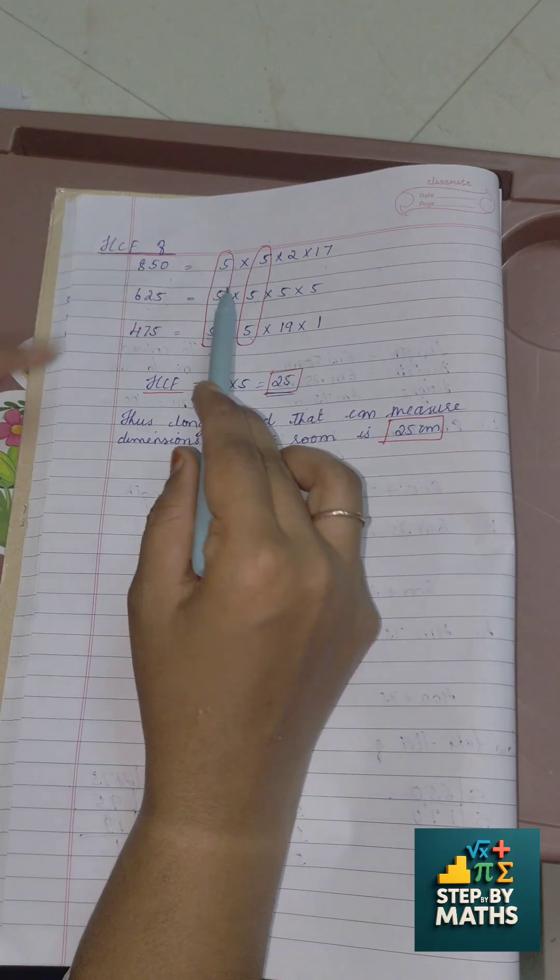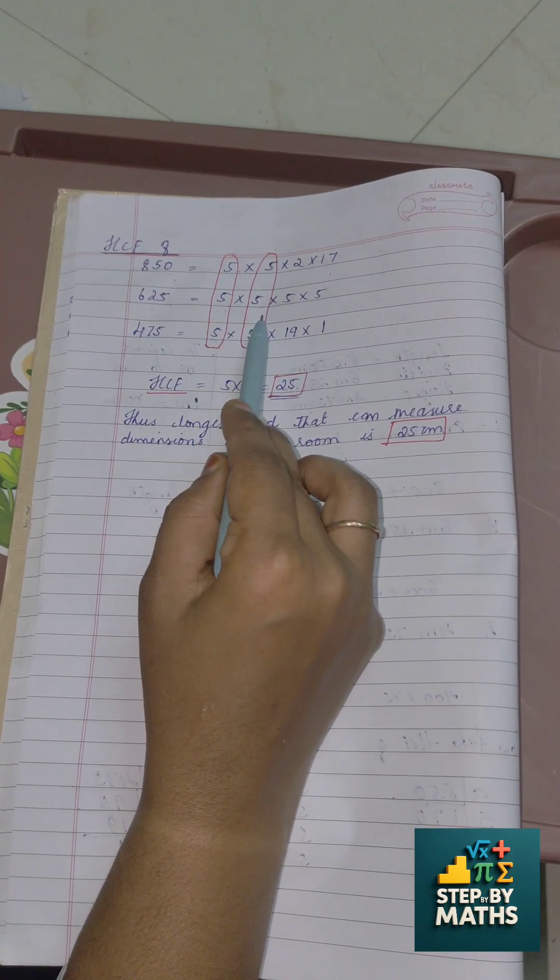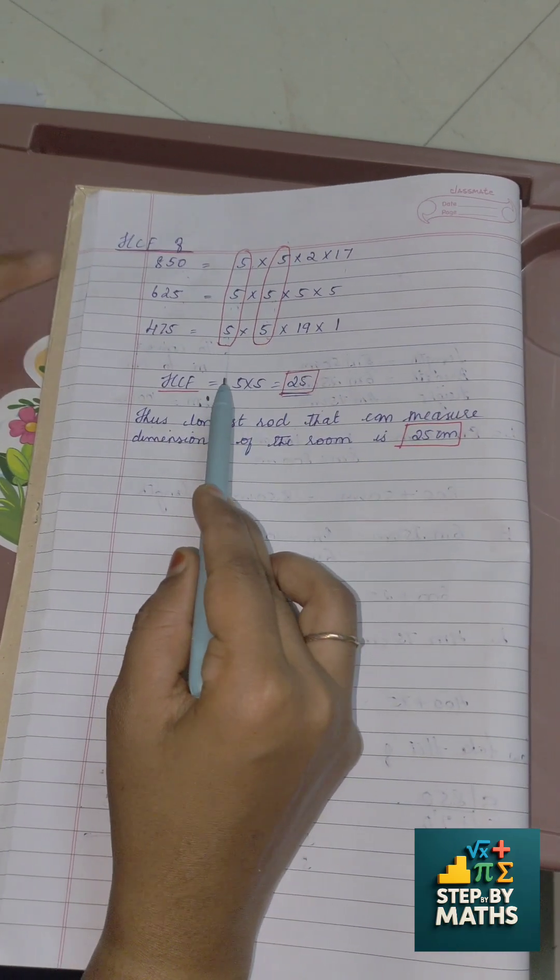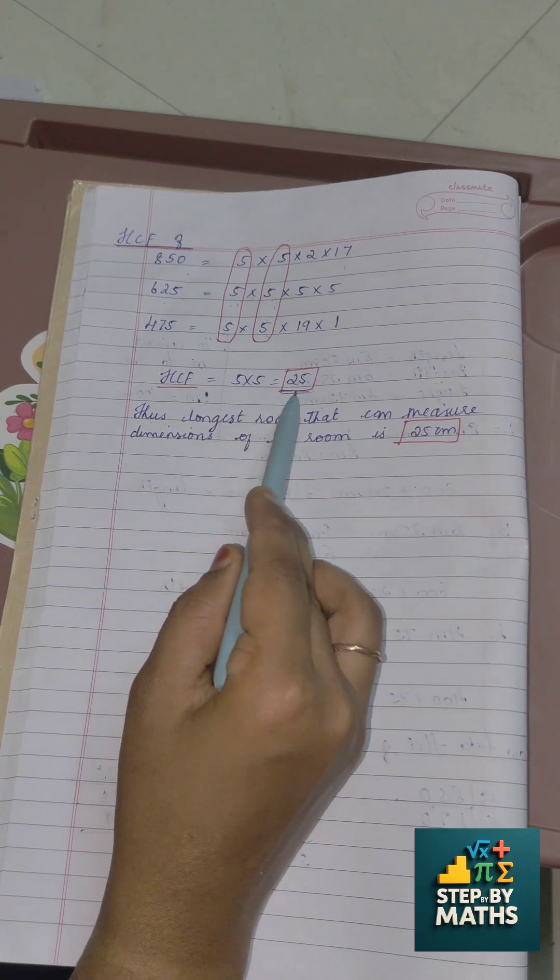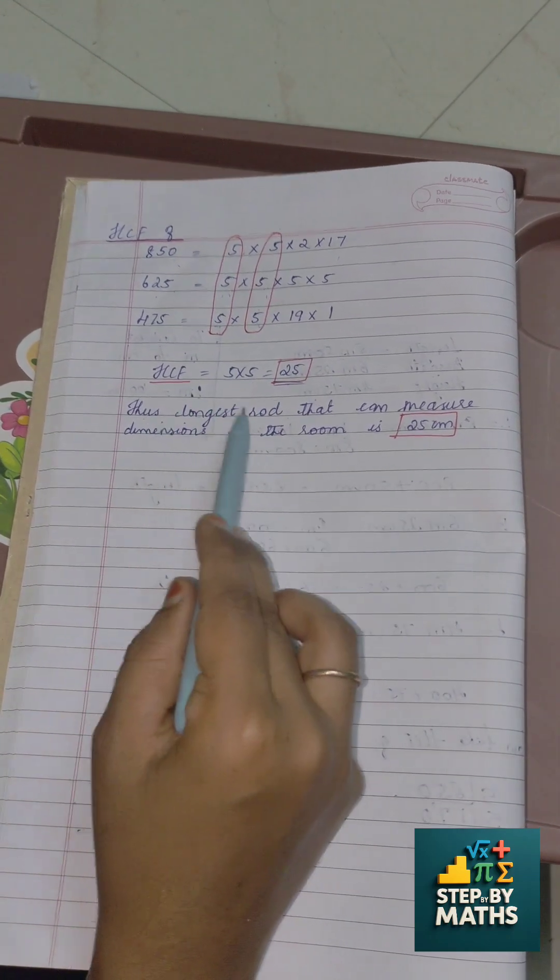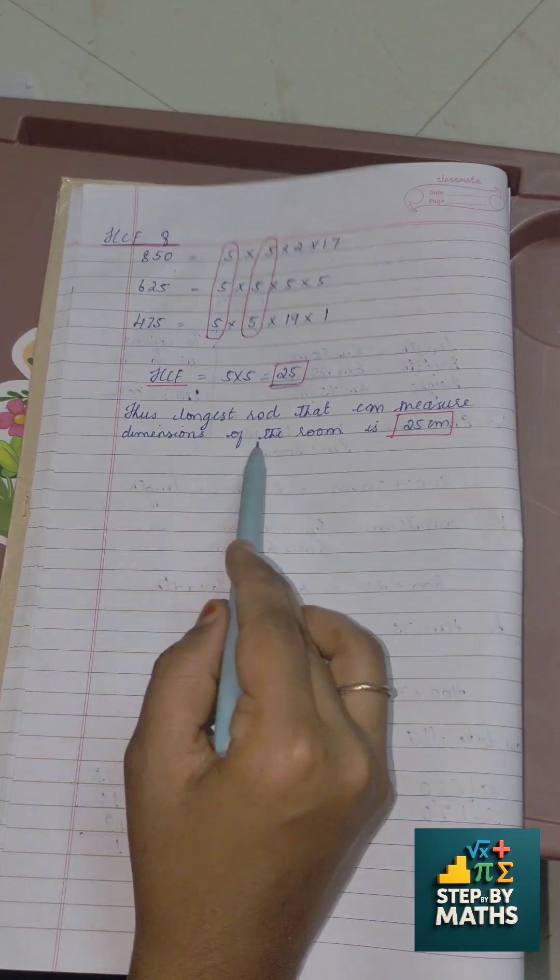The HCF of 850, 625, and 475 - which is the common over here? HCF is the highest common factor. In this, 5 is common. In this also, 5 is common. Therefore, HCF of these numbers are 5 into 5, which is nothing but 25.